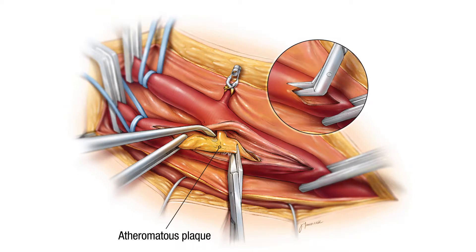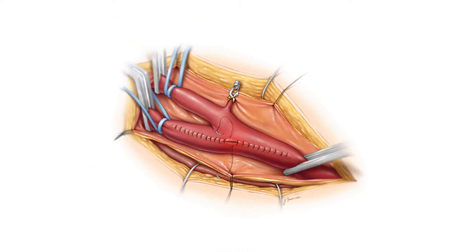Carotid endarterectomy involves opening of the vessel, removing the plaque, and then surgically reconstructing the artery. There is another treatment called stenting that is also effective and is preferred in patients with unstable heart disease and cardiac problems, because it is usually safer in those circumstances.